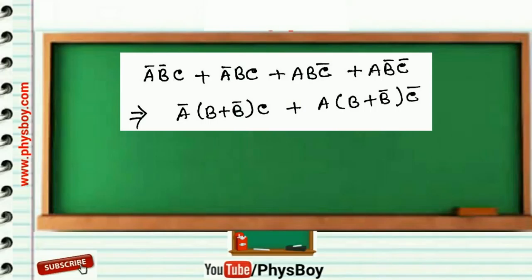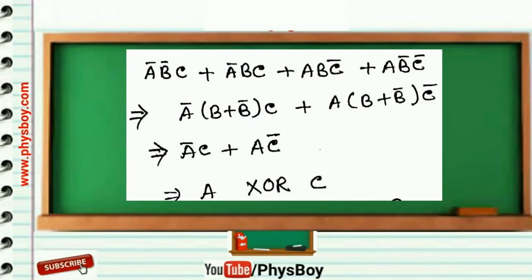You know B plus B bar is equal to 1 from Boolean algebra, so this will become A bar C plus A C bar. We can write this expression as A XOR C.